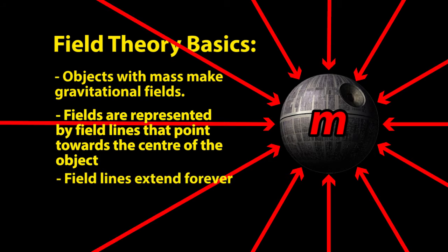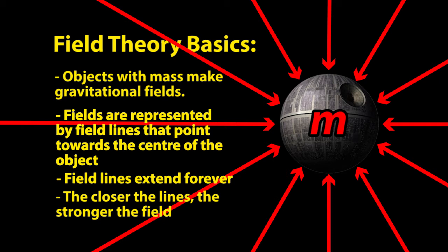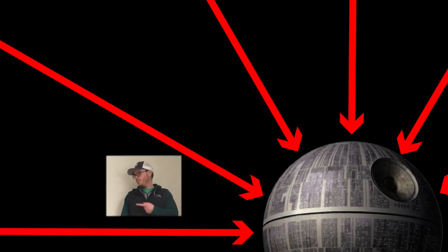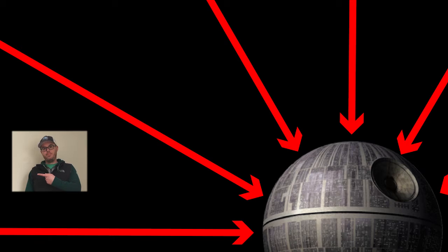In order to tell how strong the field is we don't look at the length of the line like a normal vector. We look at how close together the lines are. The stronger the field the closer together the lines will be. That means the field is a lot stronger here where the lines are closer together and it's weaker here further away from the center of the object where the lines are further apart.